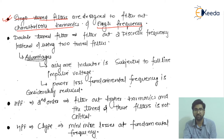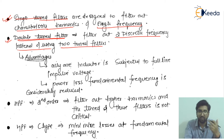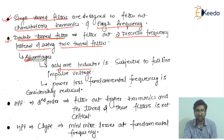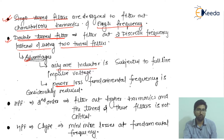The double tuned filter is designed to filter out two discrete frequencies, instead of using two separate single tuned filters. An advantage of the double tuned filter is that only one inductor is subject to the full line impulse voltage. Additionally, the power loss at the fundamental frequency is considerably reduced compared to using two single tuned filters.